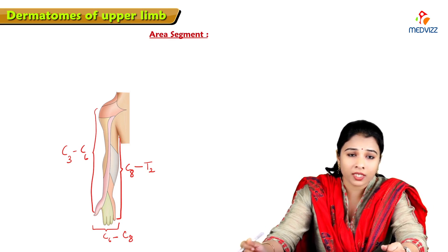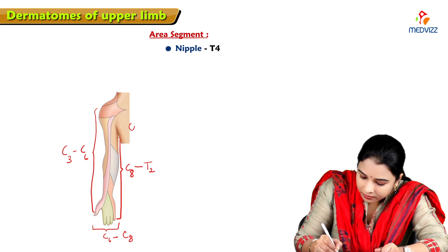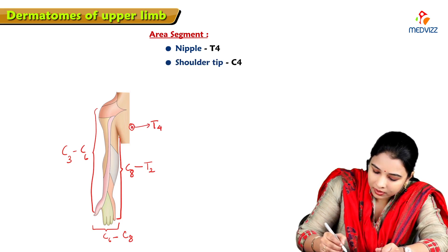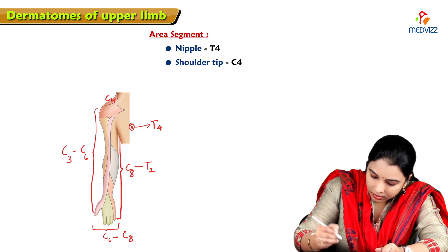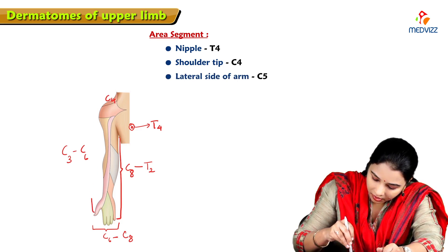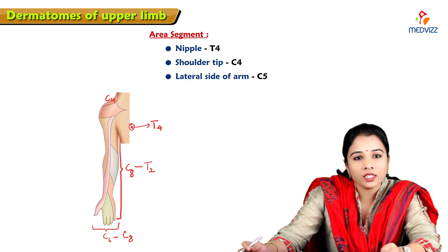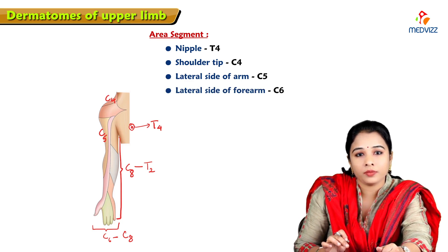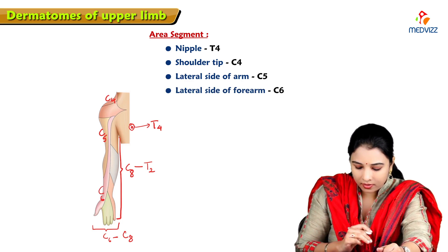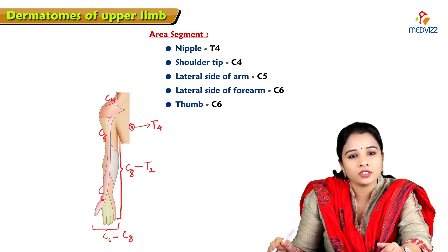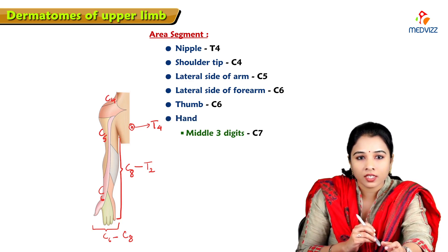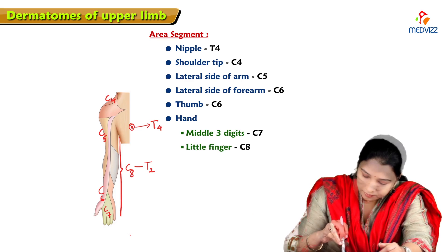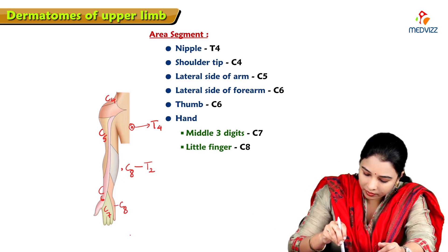Looking at specific areas: the area around the nipple is the T4 segment. The tip of the shoulder is C4. The lateral side of the arm is C5. The lateral side of the forearm is C6, and the thumb itself is also C6. The middle three digits of the hand are C7 — this is the C7 segment. The little finger is C8, with the range C8 to T2 covering the ulnar side.